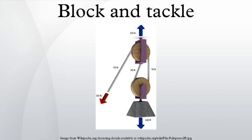A block and tackle is a system of two or more pulleys with a rope or cable threaded between them, usually used to lift or pull heavy loads. The pulleys are assembled together to form blocks and then blocks are paired so that one is fixed and one moves with a load.